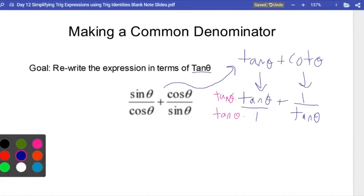Perfect. Now, what do we have? On the top, tan times tan is tan squared, tangent squared, over tan times 1 is tan. And then over here, we still have 1 over tan.